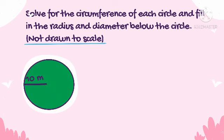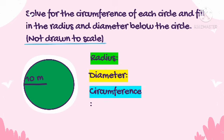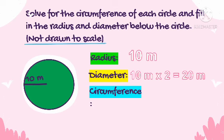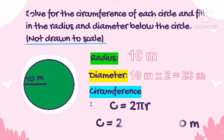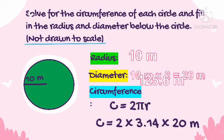Circle 3 has a radius of 10 meters. The radius is 10 meters. To find the diameter, multiply 10 by 2: the diameter is 20 meters. To solve for the circumference, since radius is given, we use C = 2πR. Substituting the given values for pi and radius, we get 125 and 6 tenths meters as the circumference of this circle.